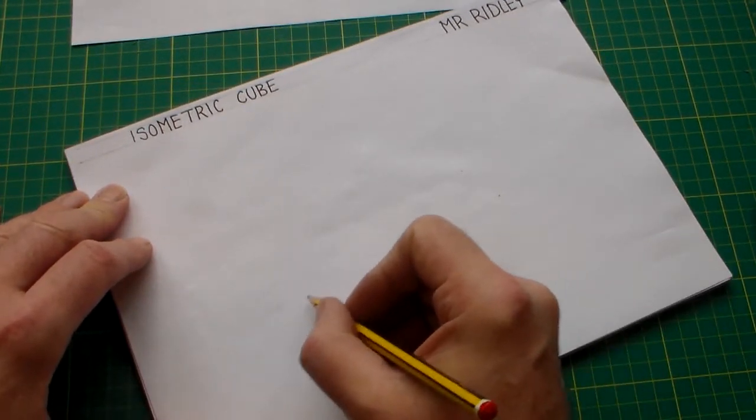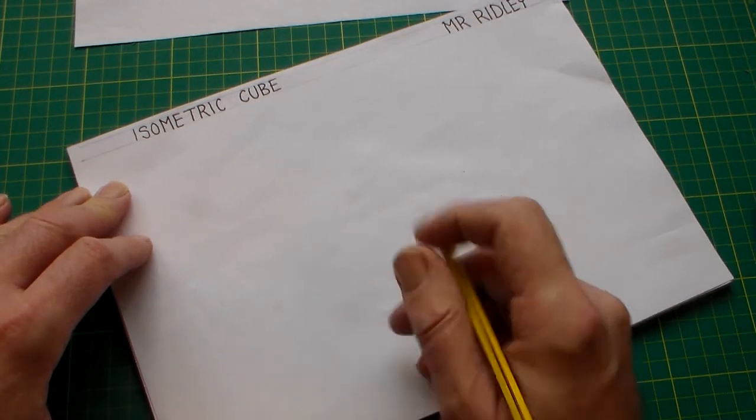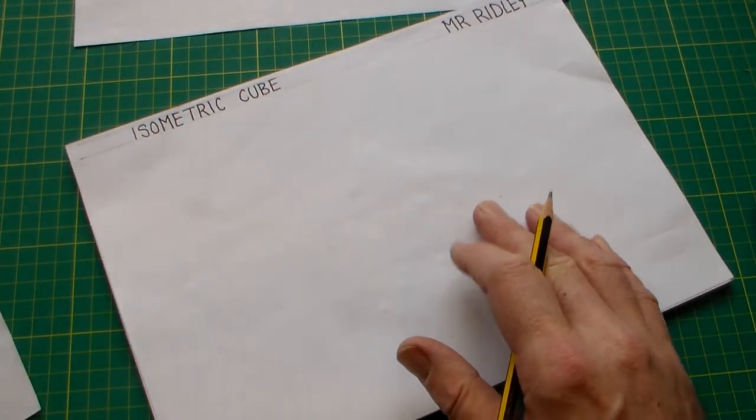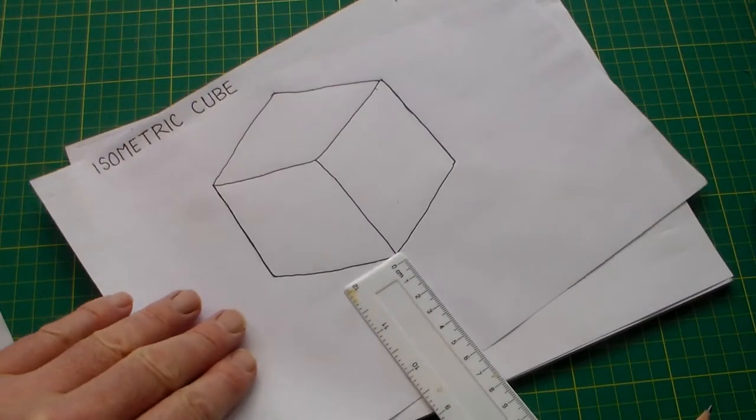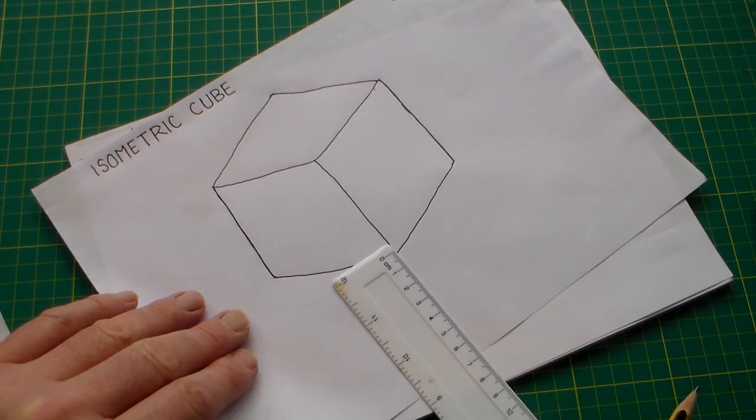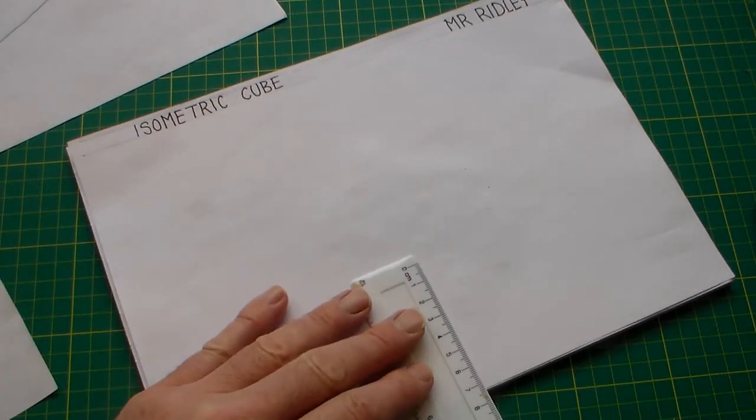Then drawing our isometric cube, if we pick a point, and I've got a point here where I want to draw the cube. We want to draw the cube in the middle of the piece of paper, so there's about six or seven centimeters there, so I'm just going to make a mark here.